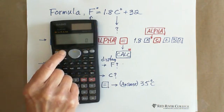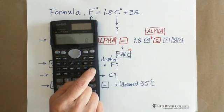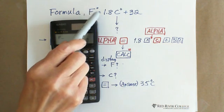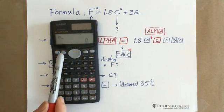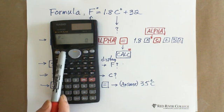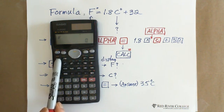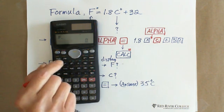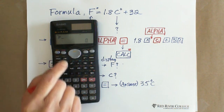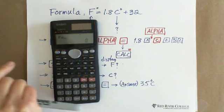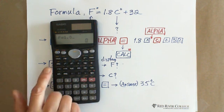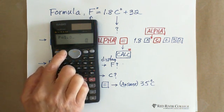So now we can use alpha F equal. This equal sign—be careful, this equal sign is not this equal sign. The other equal sign with alpha red one, there is an equal sign on the top of CALC, which is beside the solve. So you still hit the alpha, then hit the equal, then equal 1.8 C. You can say multiply C, or just enter C, alpha C.